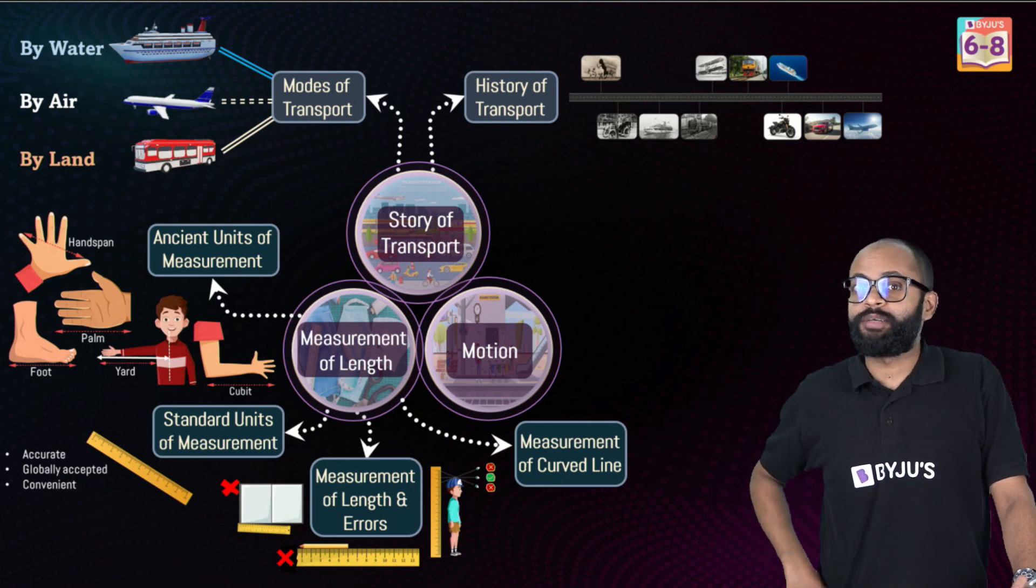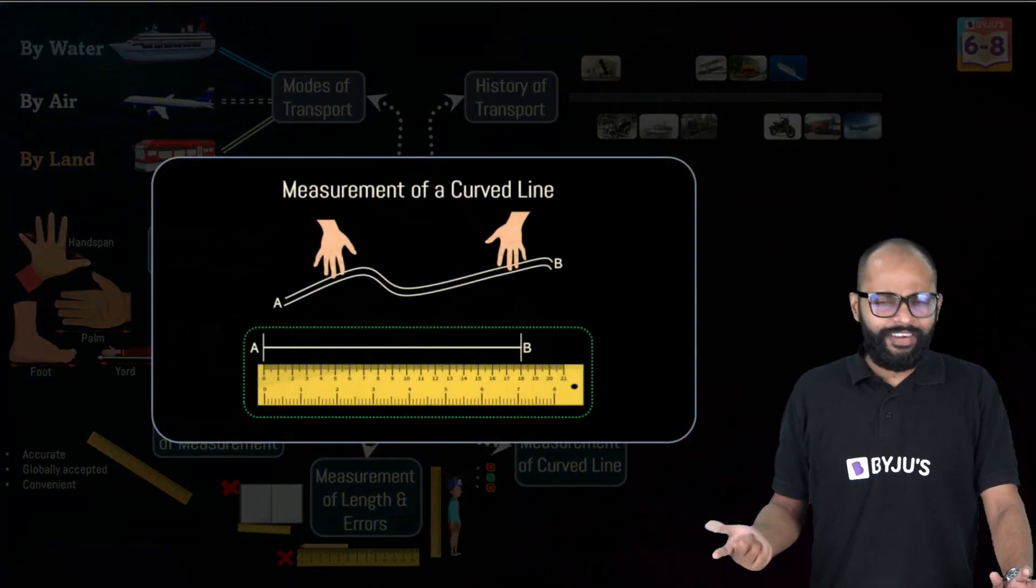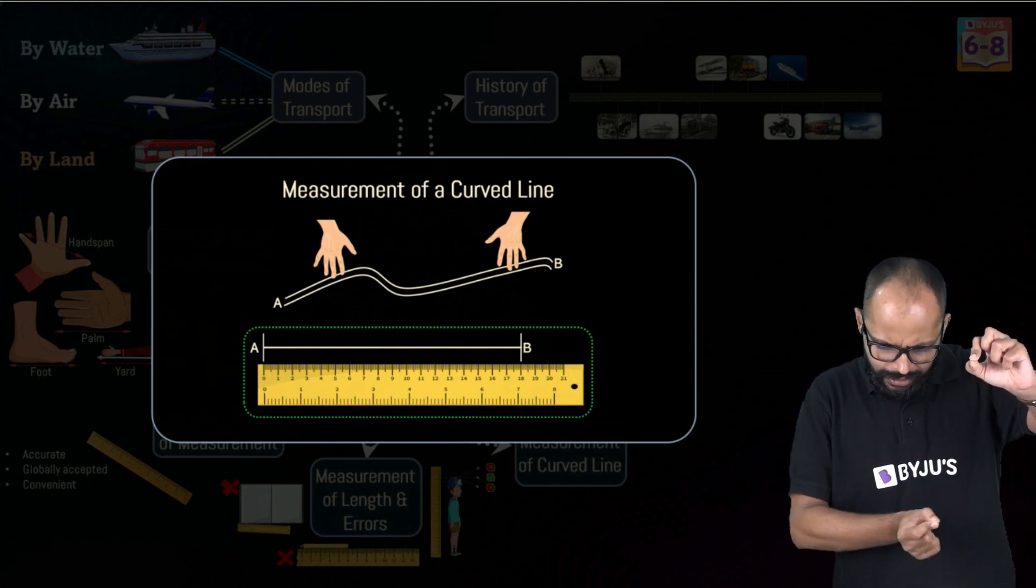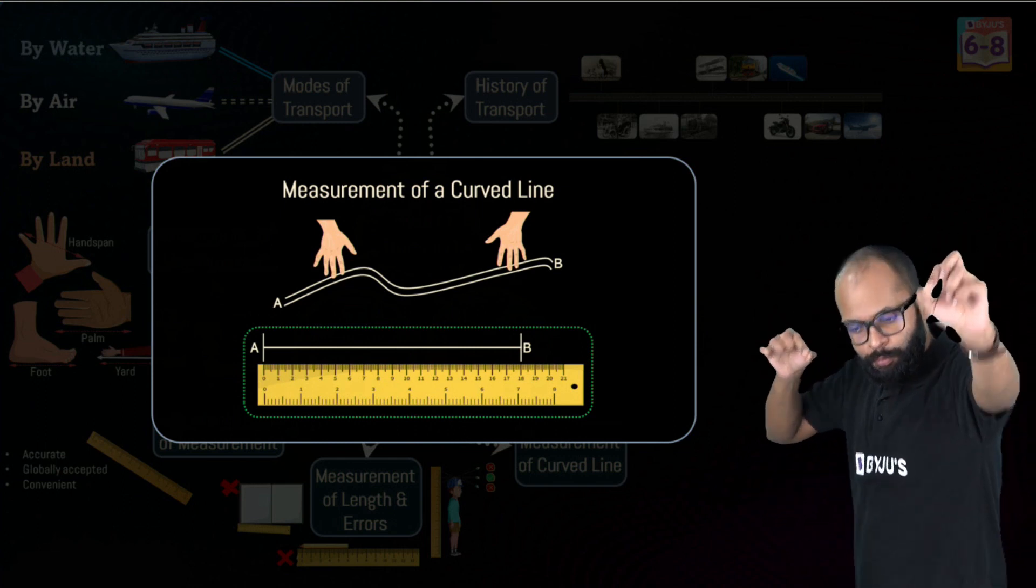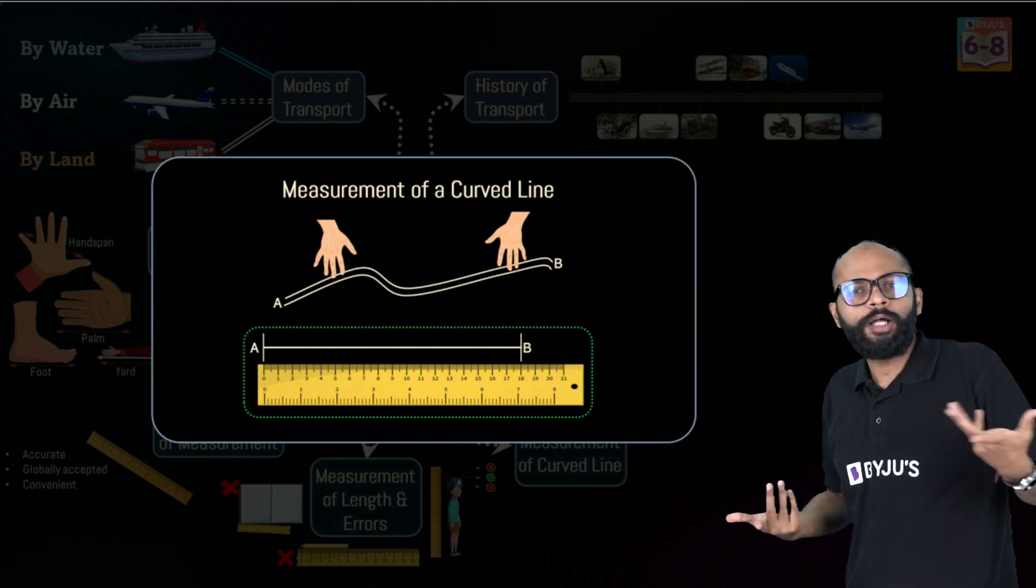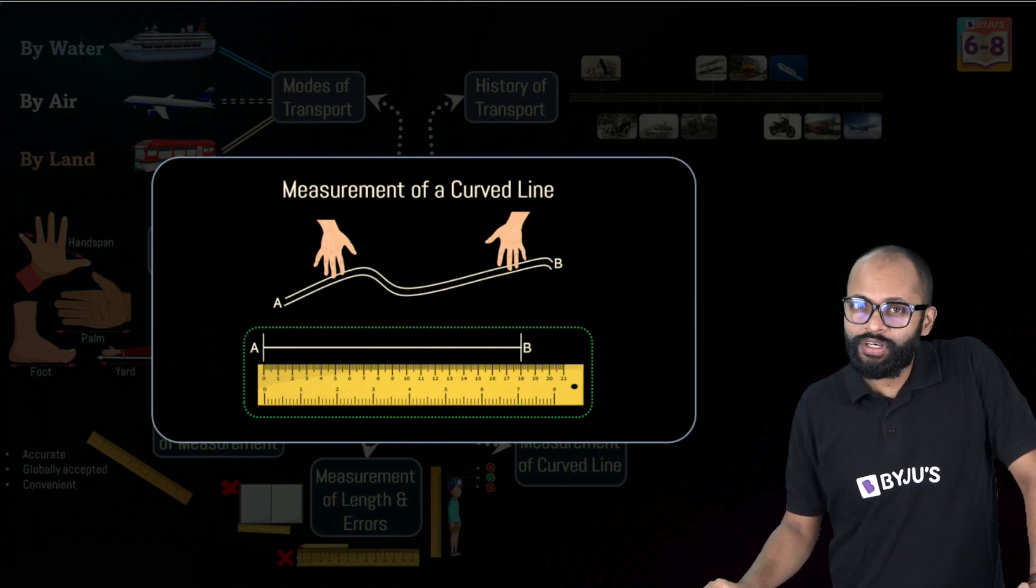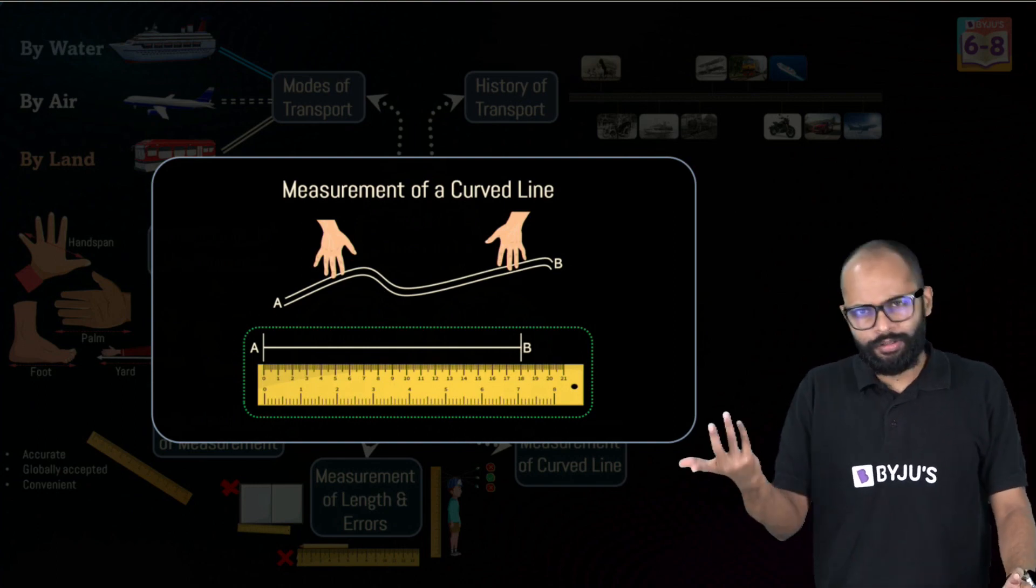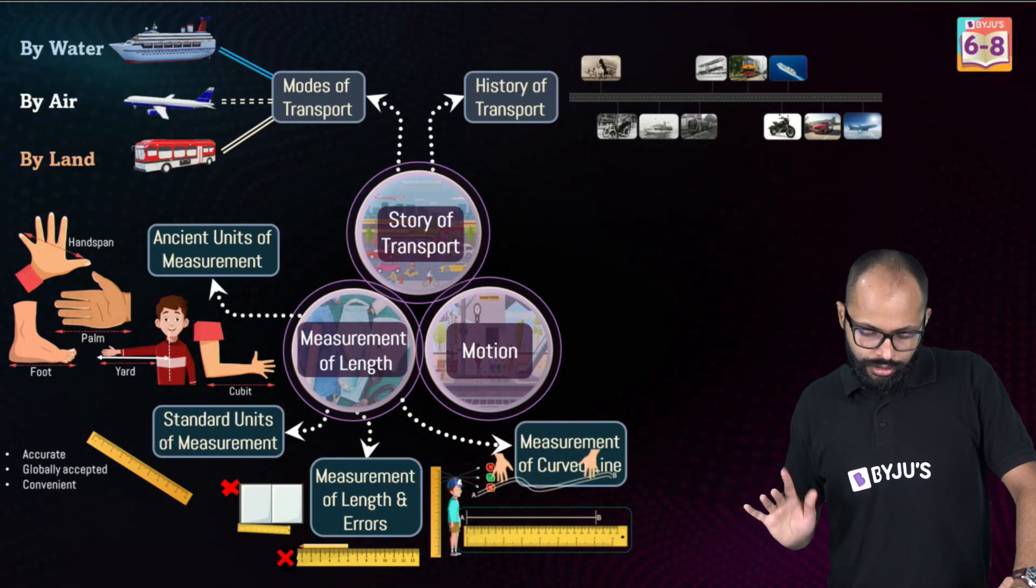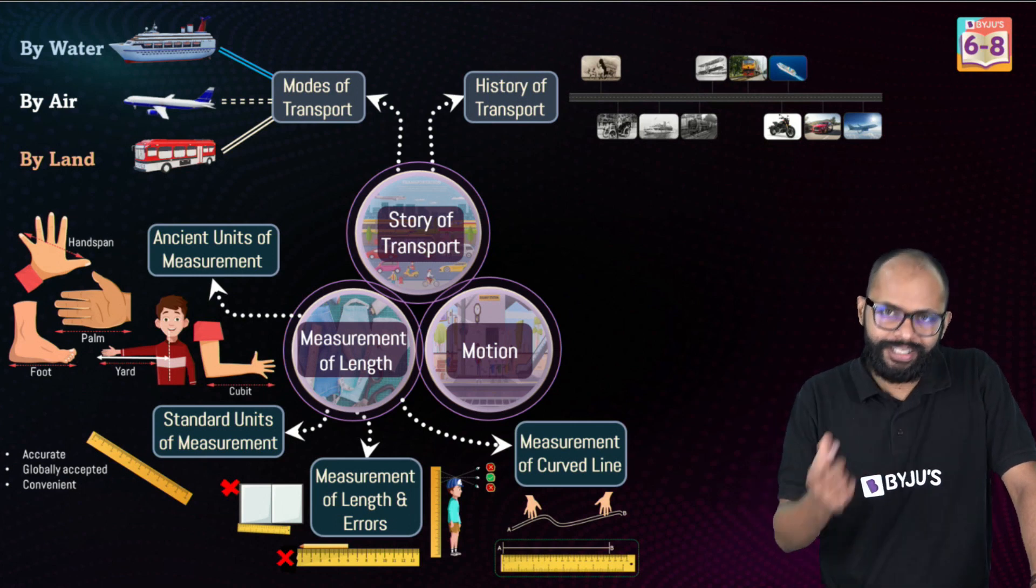How to measure the curved line? Because curved line you cannot use a scale. You take a thread, align it along the curved line, then you take the thread out, stretch it out, place it next to a scale and measure the length. That's how you can use a thread. You can also use a measuring tape because measuring tapes are also flexible, but threads are better. This is about measurement of curved line. Your revision is time-saving. Revision should not be one hour session.